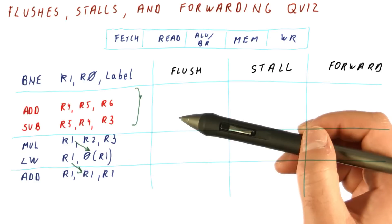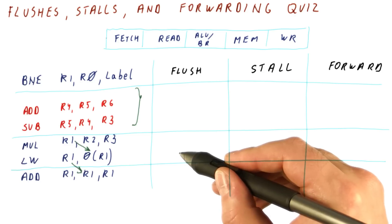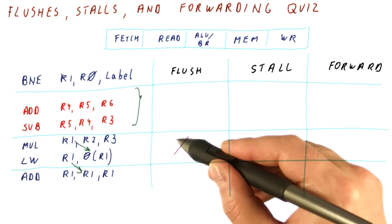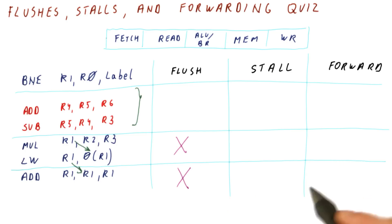Note that in some cases, more than one of these needs to be used for optimal performance. To help you get started, I'm going to tell you that for data dependencies, as we said, we never want to use flushing. So the real question is just, should you stall or forward?